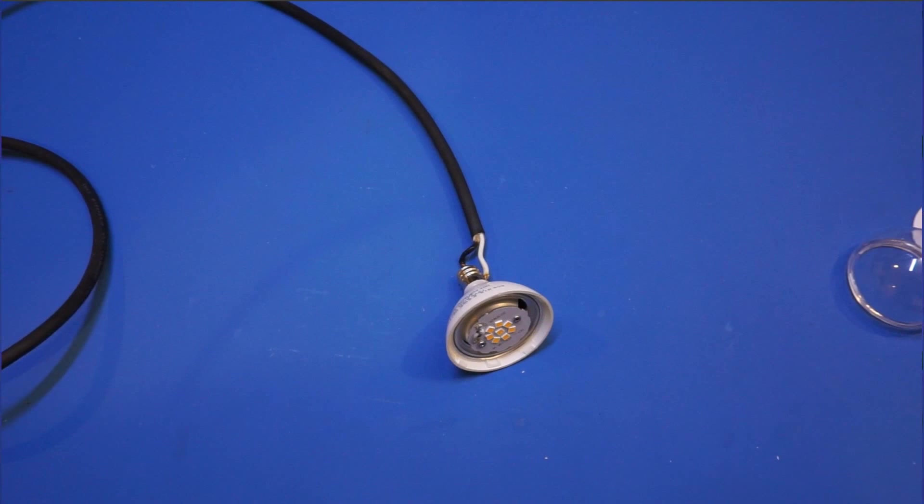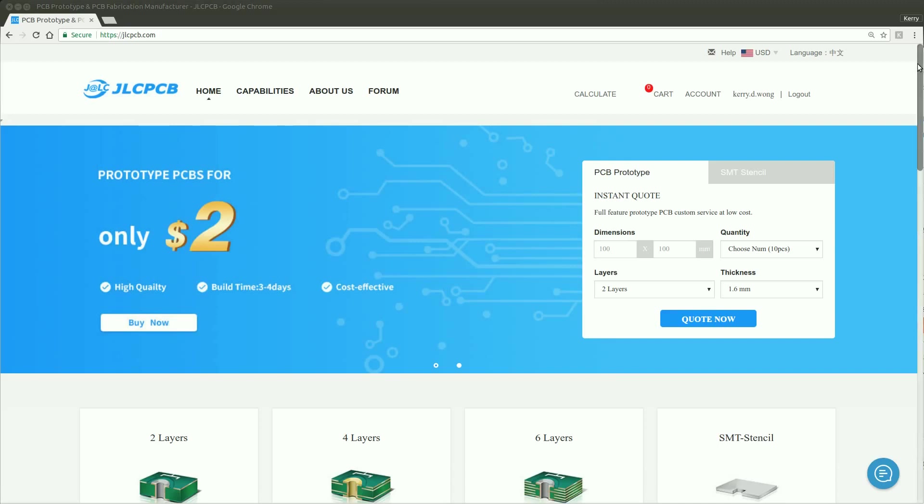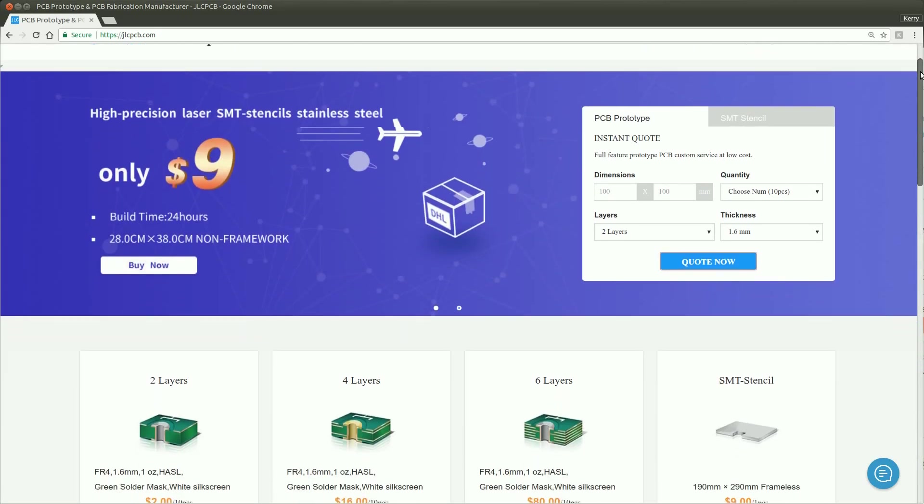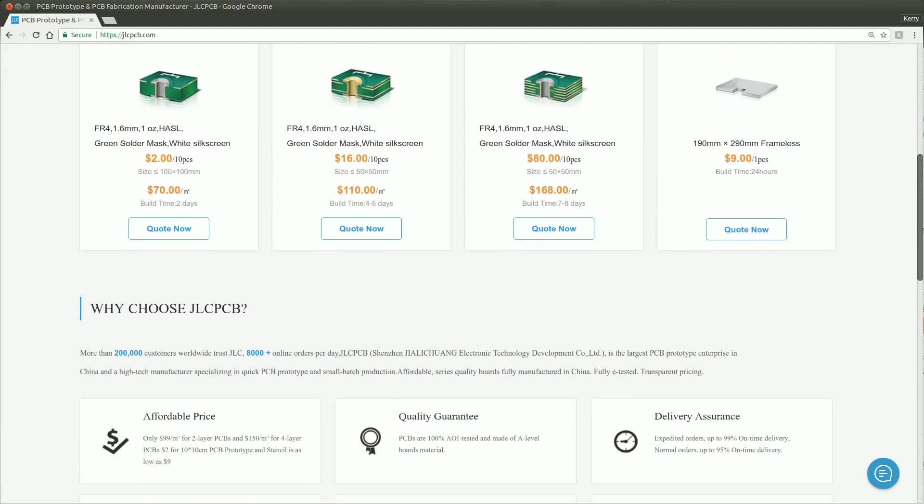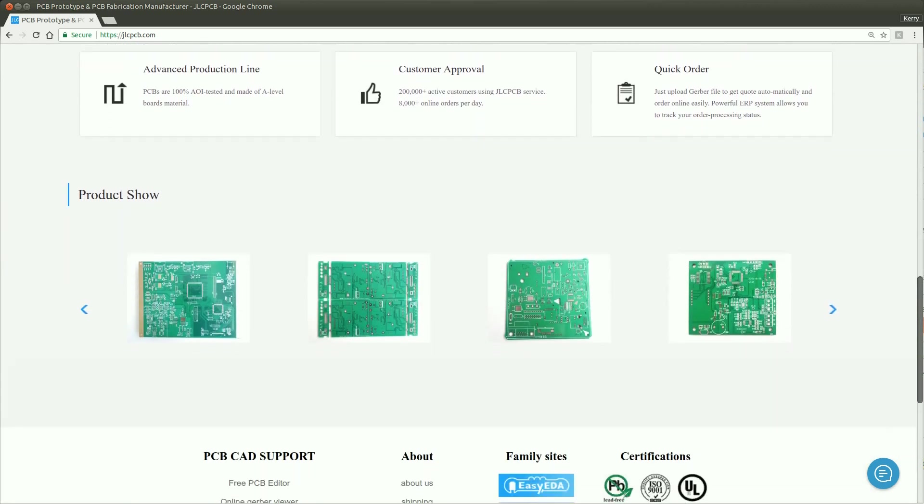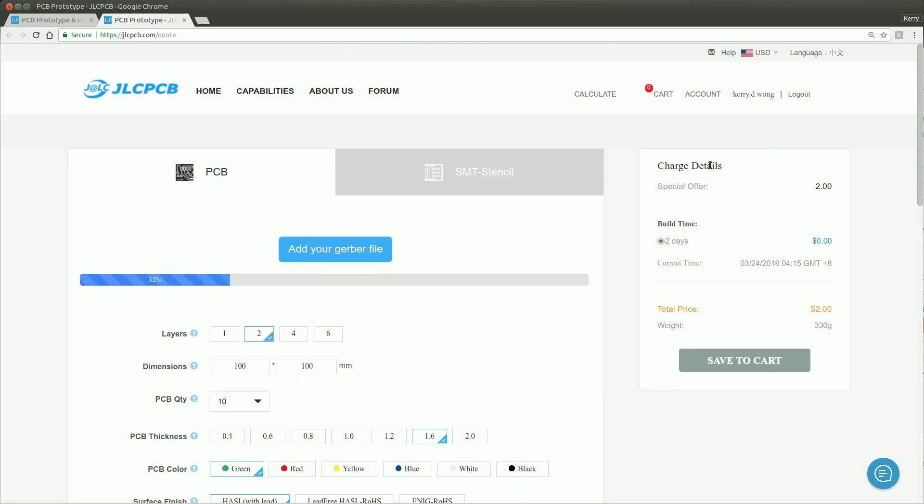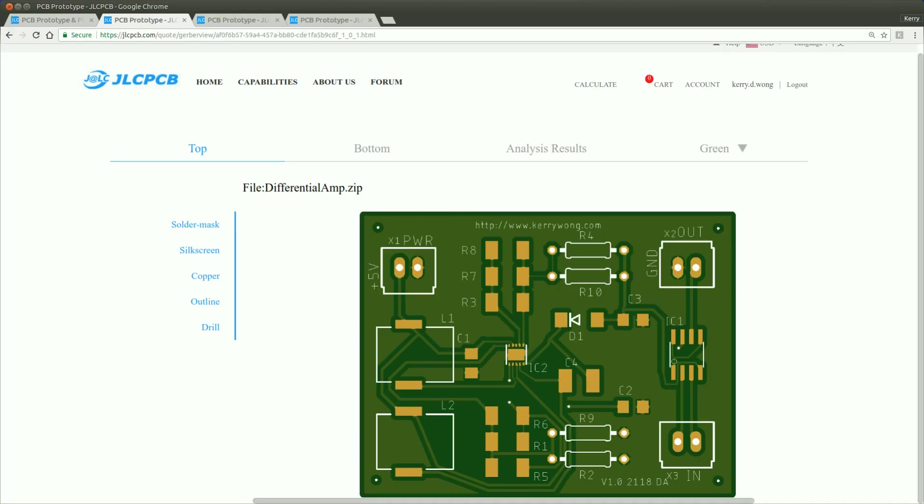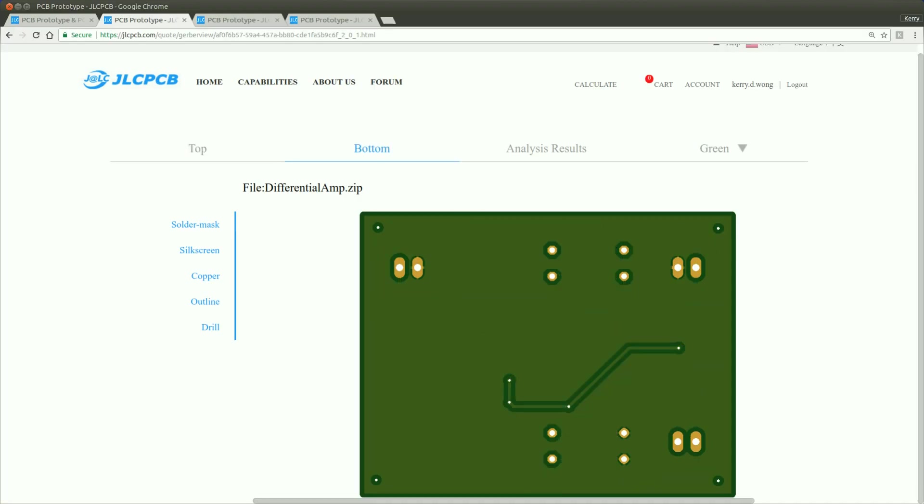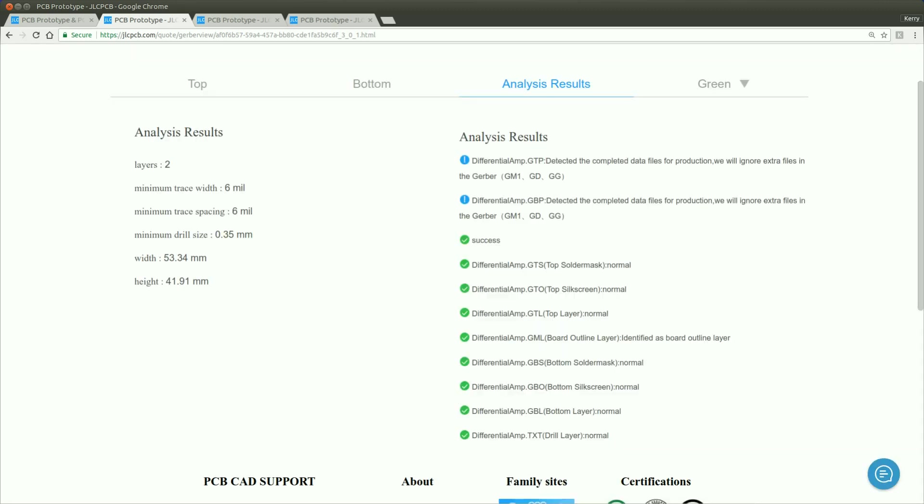Speaking of which, this video is sponsored by JLC PCB where you can have your PCBs professionally made. JLC PCB offers hobbyists and professionals very affordable PCB manufacturing services. For instance, you can get 10 pieces of dual layer PCBs made with a dimension up to 10 centimeters by 10 centimeters each for just two dollars plus shipping.